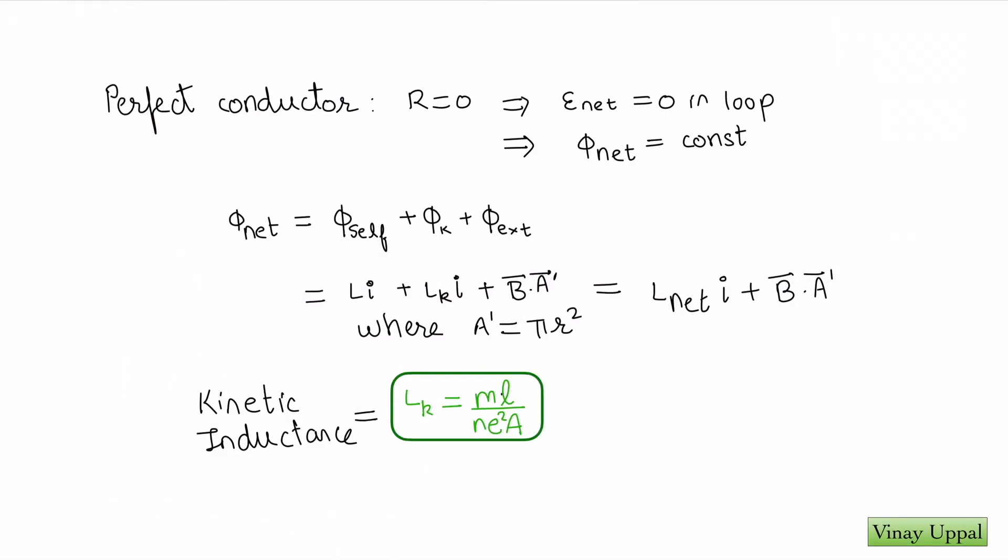A perfect conductor implies that resistance is 0, and if resistance is 0, the net EMF in the loop will also be 0 because I can write net EMF in the loop as IR, and R is 0, so the net EMF is 0. If the net EMF is 0, then that means that the net flux is constant because EMF is rate of change of flux by Faraday's law. The only thing here is that the net flux has to include the kinetic flux associated with the kinetic inductance as well.